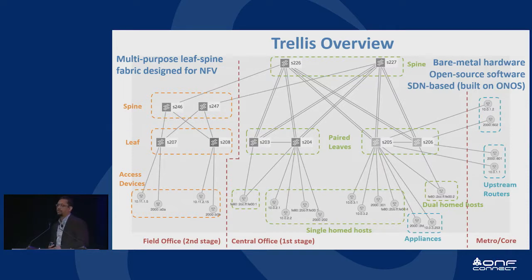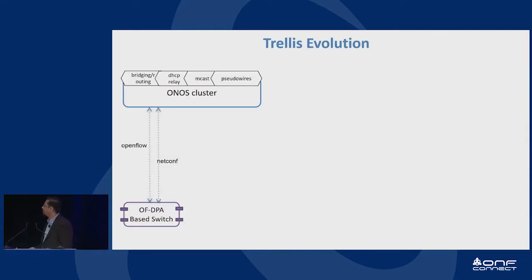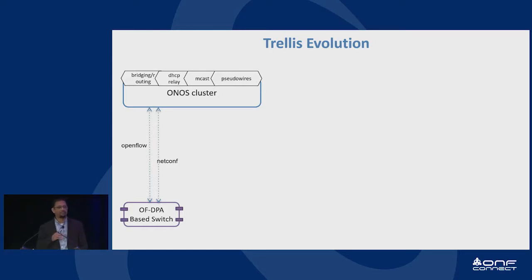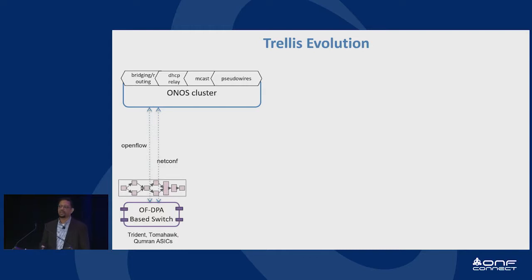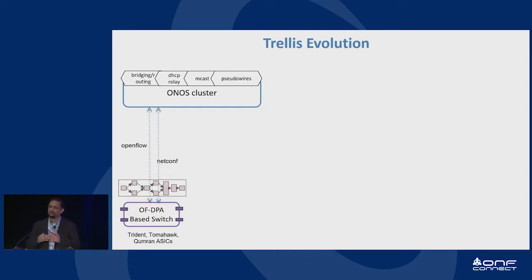Trellis is built on bare metal hardware and open source software, and it's SDN-based, built on top of ONOS. Today it's built on top of ONOS, with all the applications and features that Trellis provides communicating using OpenFlow and NETCONF to switches which have Broadcom ASICs inside and software from Broadcom known as OFDPA. What OFDPA does is provide an abstraction — a pipeline on top of a variety of Broadcom ASICs: Trident, Tomahawk, and Qumran. The Trident-Tomahawk line is very different from Qumran, so the pipelines are very different. Broadcom, with OFDPA, takes care of those differences and provides essentially one pipeline to which Trellis programs.